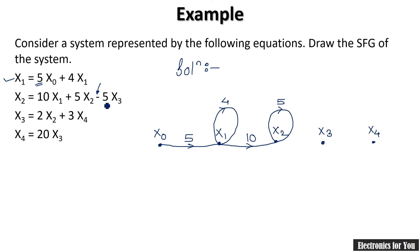We are drawing for x2 and moving to x2. Negative sign will indicate the incoming signal to x2 from x3. You are moving from x3 to x2, but its gain is minus 5, so this will satisfy this equation: 10x1 plus 5x2 minus 5x3.